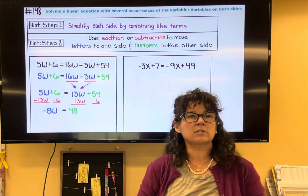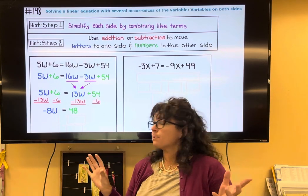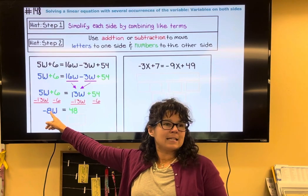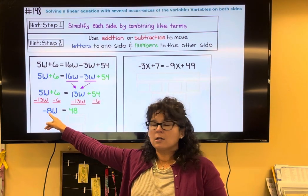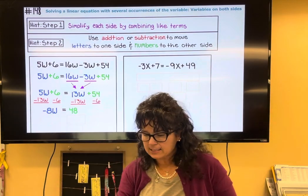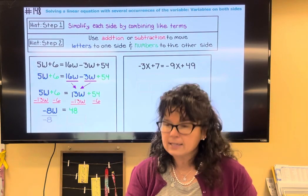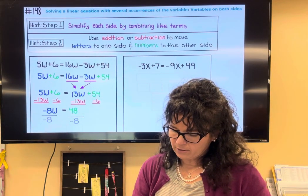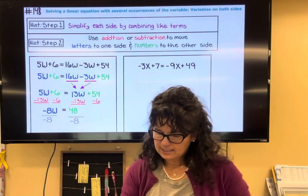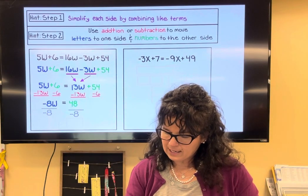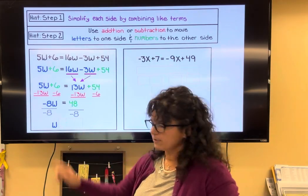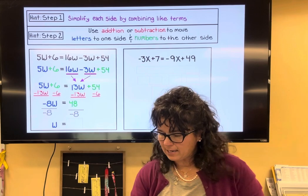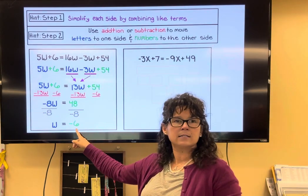Now I ask: what's preventing w from being by itself? It's sitting next to negative 8, which is multiplication. To undo multiply by negative 8, I divide both sides by negative 8. The negative 8 cancels and w is by itself. Positive 48 divided by negative 8 is negative 6, so w equals negative 6.